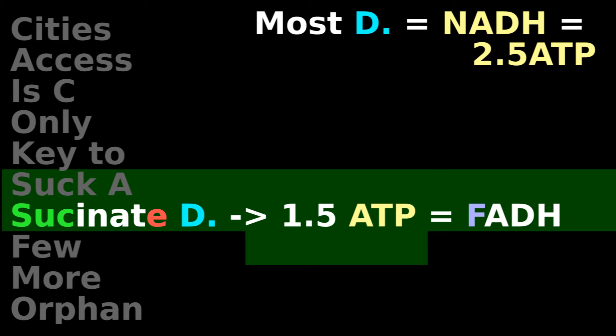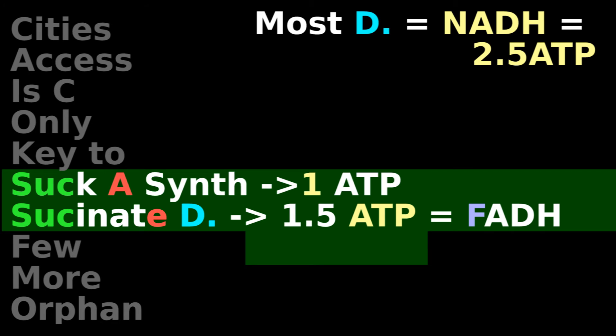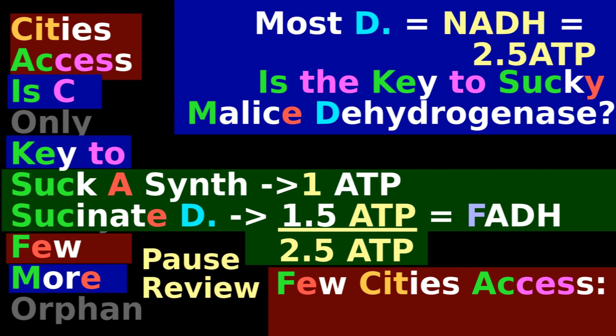Luckily, the succinyl-CoA synthetase makes 1 ATP equivalent, so the two suck steps combined eventually make the same amount of ATP as the regular dehydrogenases. Pause and review.